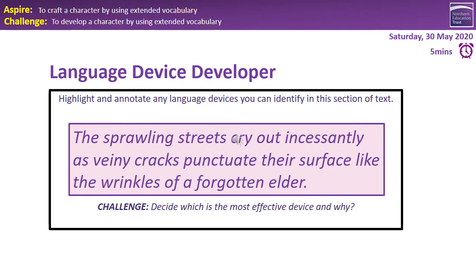Let's have a little look at this together. When it says 'the sprawling streets cry out', I can see personification here — it's almost like desperation. The fact that they're 'sprawling streets' — we've got some alliteration there to show how spread it is, almost slowing down the vocabulary so you can appreciate the pain it's in. 'As veiny cracks puncture their surface' — the fact that it's veiny, the cracks that are there, it's given us those verbs as though it's almost affected on purpose. And again, it's personification as well.